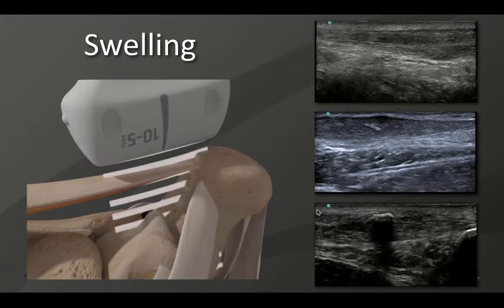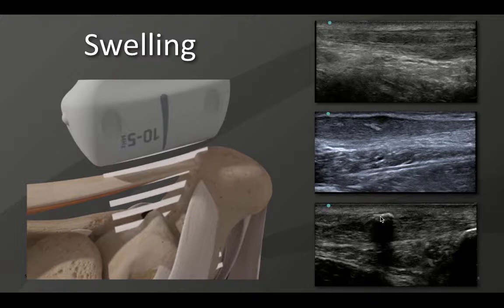A more mature calcium deposit showing shadowing is seen here — what's called a posterior acoustic shadow — on the superficial surface of the Achilles tendon. This almost looks like a tophus. These things are very common when we look at old injuries in athletes or former athletes who've had Achilles tendon strains; we see these calcium deposits pop up all over the tendon. We equate those with old scars that have eventually solidified and calcified. As they become more mature, they'll actually cast a shadow, much like cortical bone.